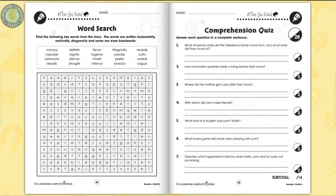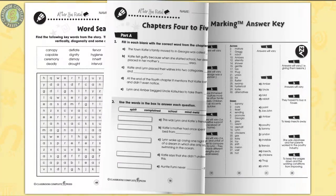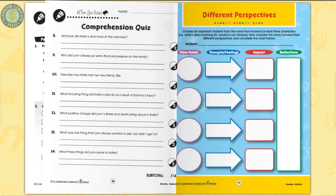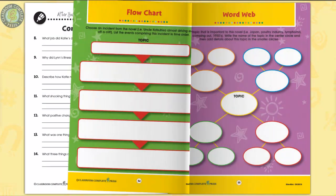A word search puzzle and comprehension quiz ends the unit. The easy marking answer key works by lining up perfectly with the matching question pages. Three color posters, which are graphic organizers, completes the resource.